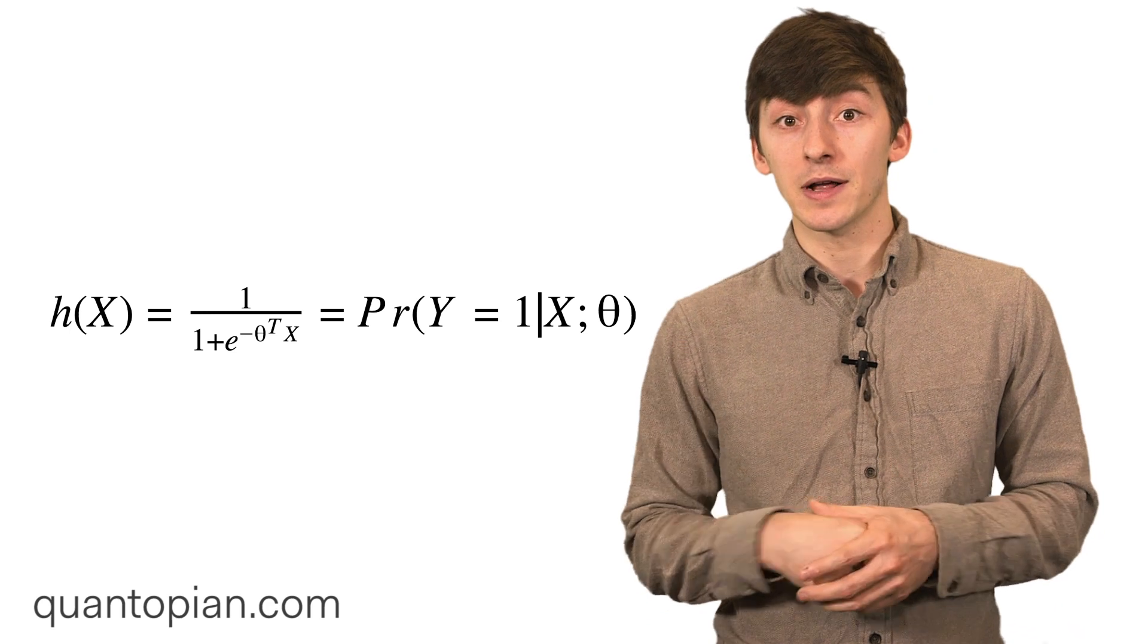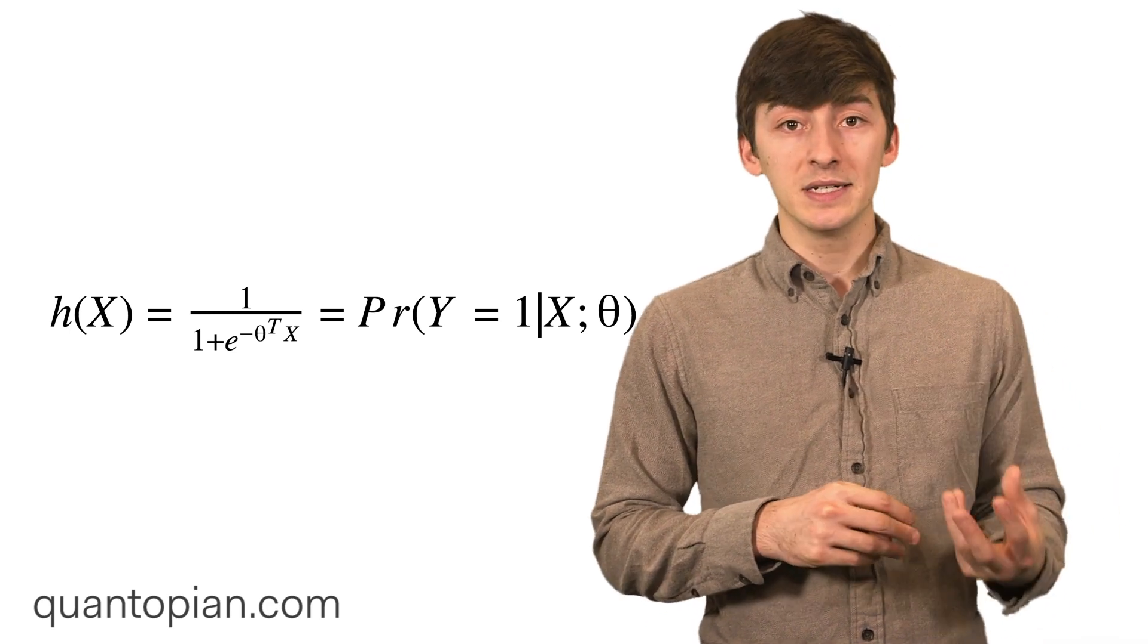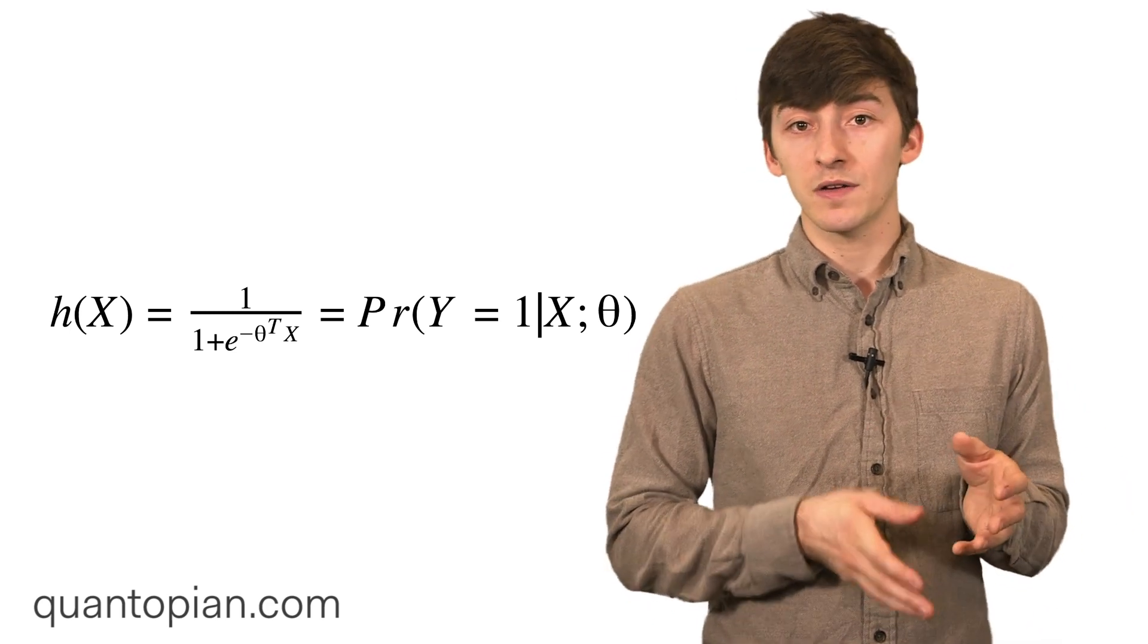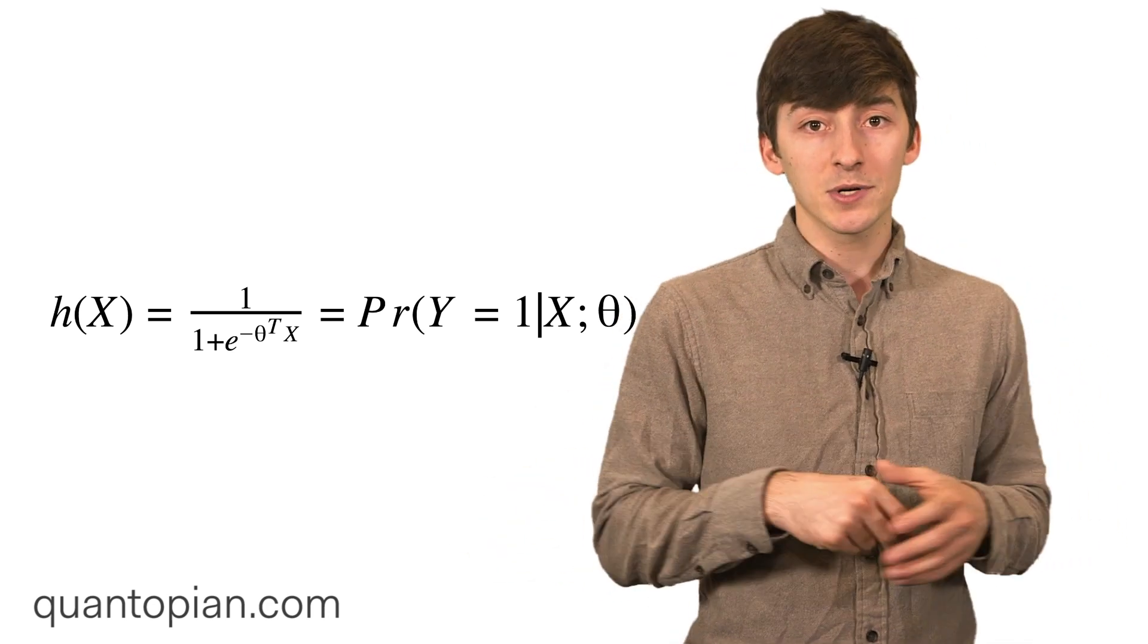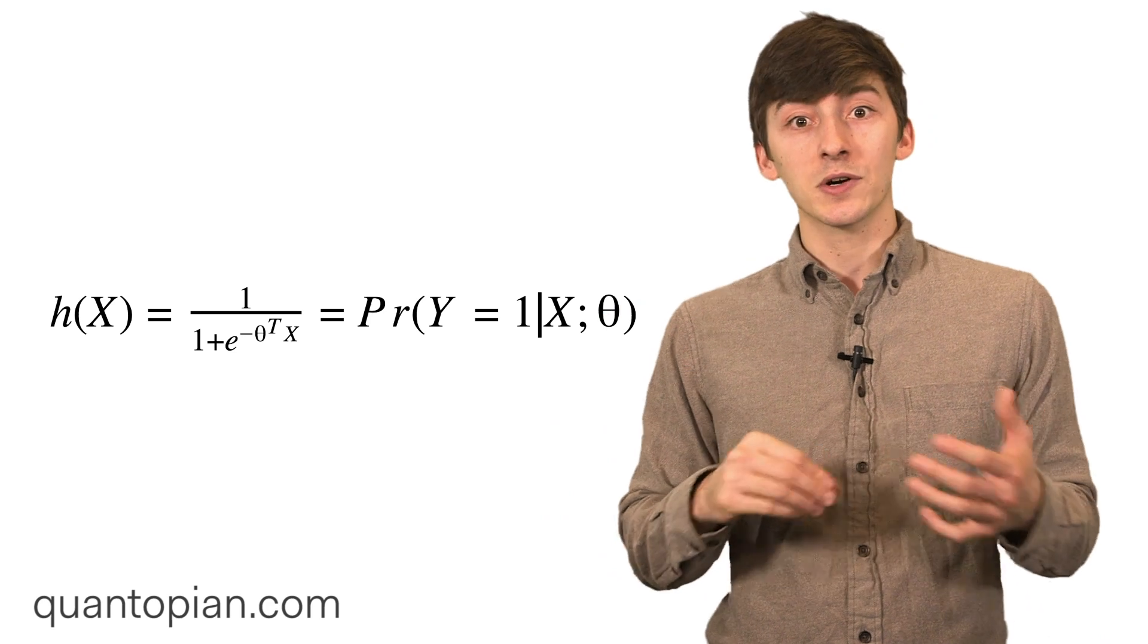Basically we take a multiple linear regression where our dependent variable is a function of many independent variables, each with their own unique coefficients and an intercept term, and we stuff that inside a logistic function.